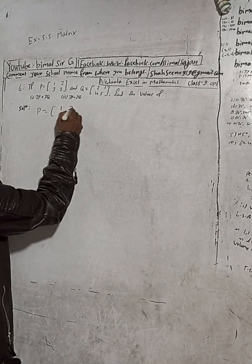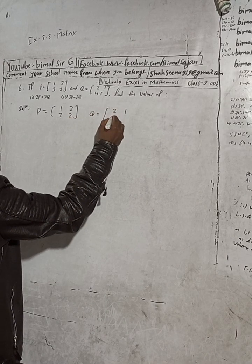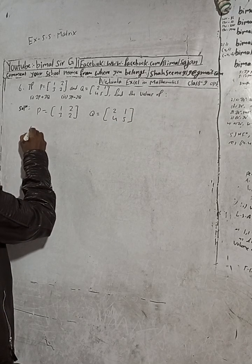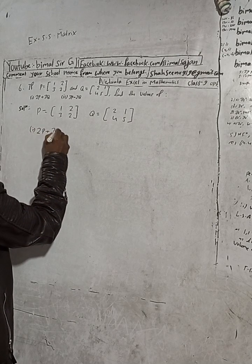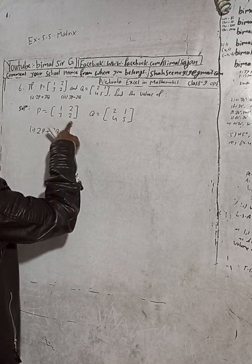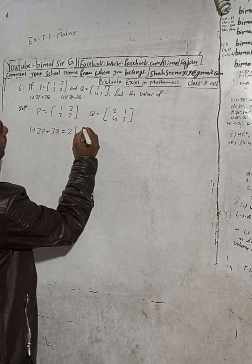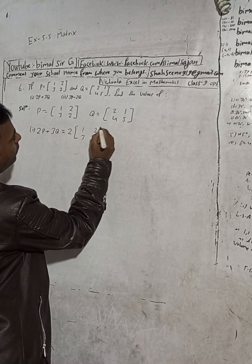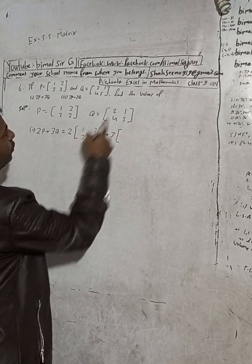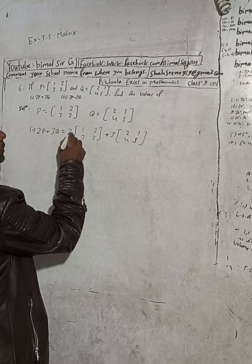So here, first write P is equal to [1 2; 3 2] and Q is equal to [2 1; 4 5]. Number one is 2P plus 3Q. So 2P — the value of P is here [1 2; 3 2], plus 3 and Q is here [2 1; 4 5]. Now multiply these two.